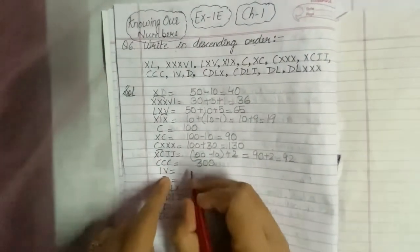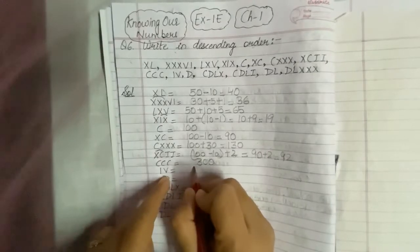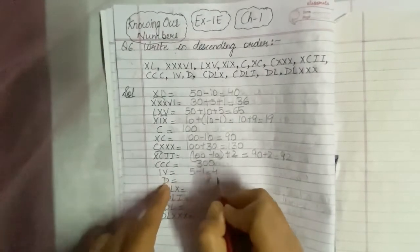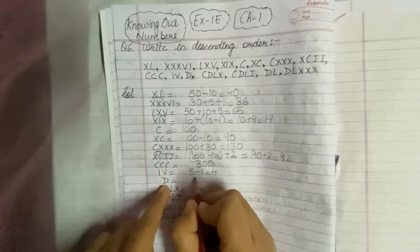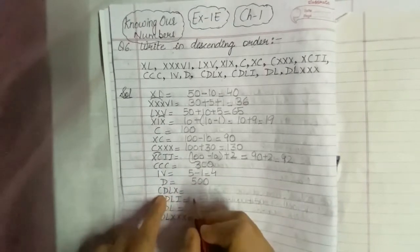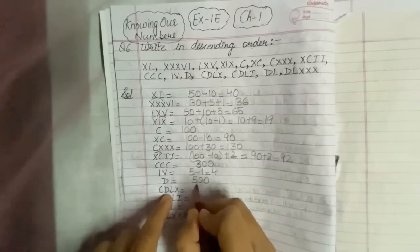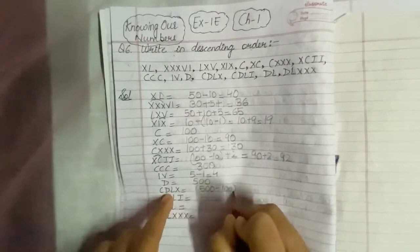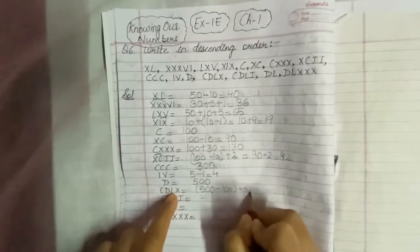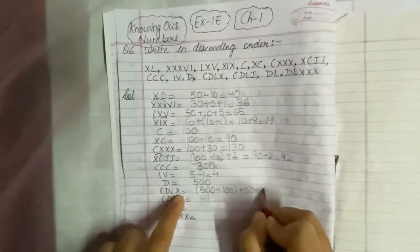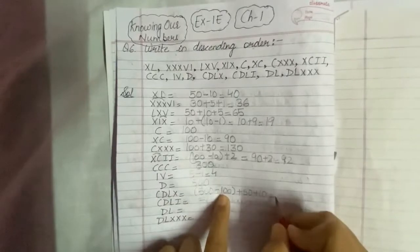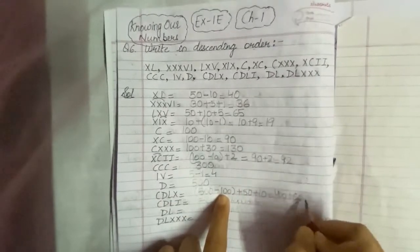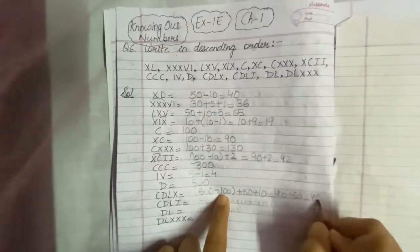Next is IV: 5 minus 1, that is 4. Then CDLX: D stands for 500, CD means 500 minus 100 which is 400, L means 50 and X means 10, so 50 plus 10 is 60. Therefore 400 plus 60 equals 460.